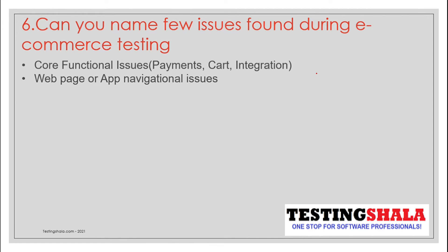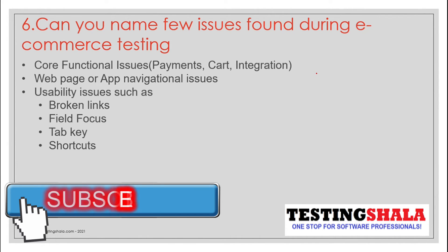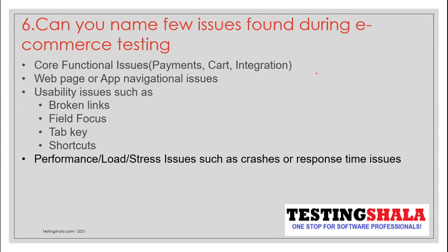There could also be navigational issues from a web or mobile app perspective. You can also talk about usability issues, such as broken links, certain pages not opening, or clicking links that don't work. Field focus not working, Tab key not working, inability to move from one field to another in proper order, and shortcuts not working are all usability issues you can mention with specific examples.